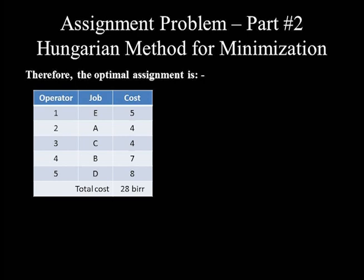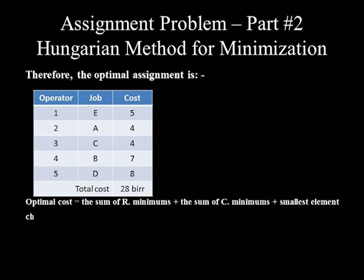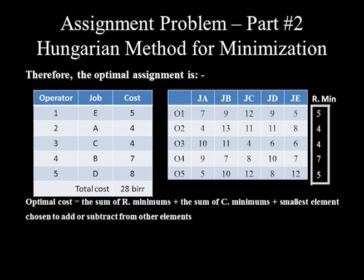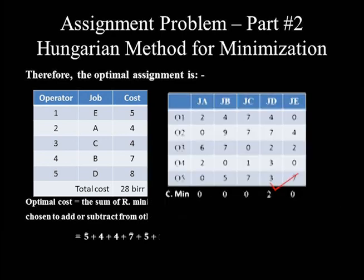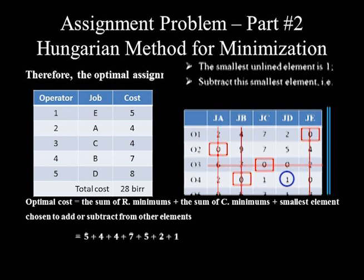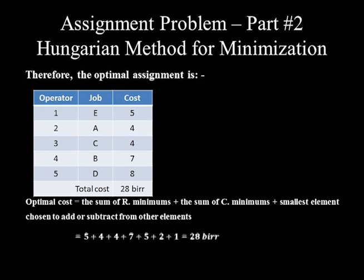To verify, use the formula: optimal total cost = sum of row minimums + sum of column minimums + smallest element chosen in step 3. Row minimums are 5, 4, 4, 7, and 5 (sum = 25); the only non-zero column minimum is 2 (column 4); and the smallest element chosen is 1. So 25+2+1 = 28, which matches our determined optimal cost, confirming the assignment is correct.